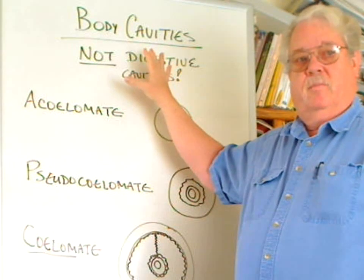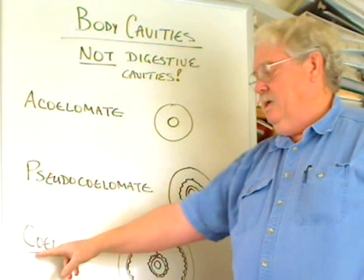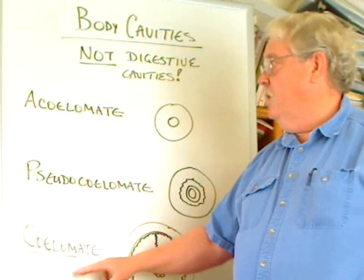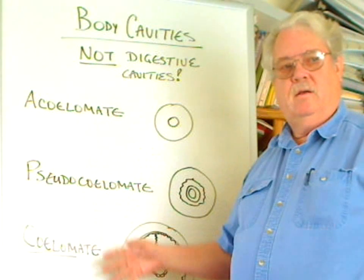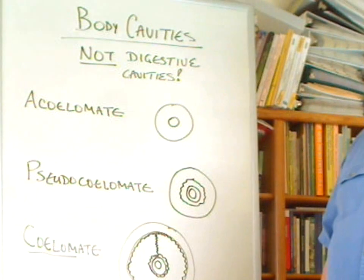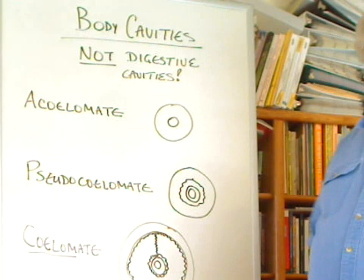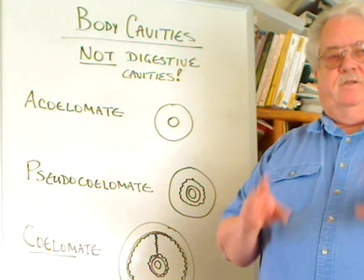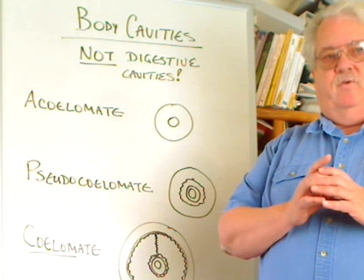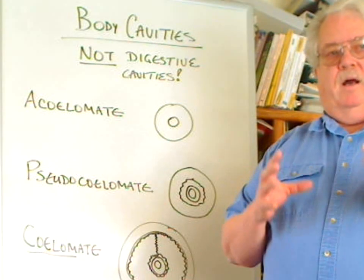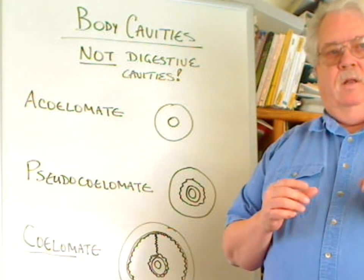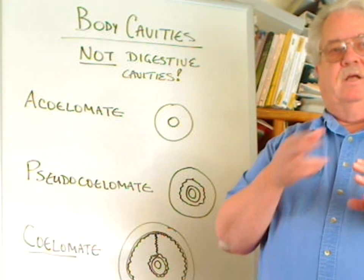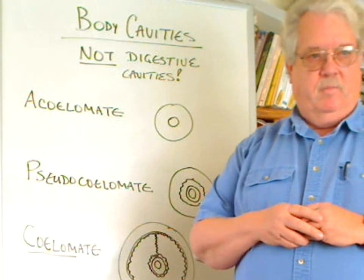The general term for a body cavity is coelom, spelled C-O-E-L-O-M. We have three classes of body cavities. All of these relate to whether or not there is a space between the digestive tract and the body wall, and whether or not that space has a lining of something we call mesenteries.